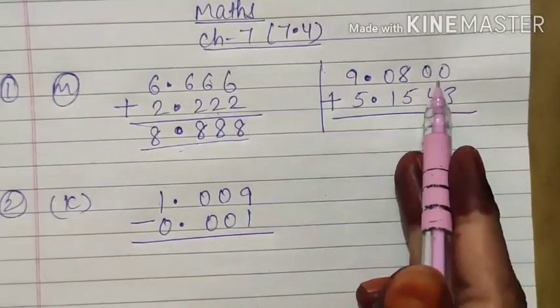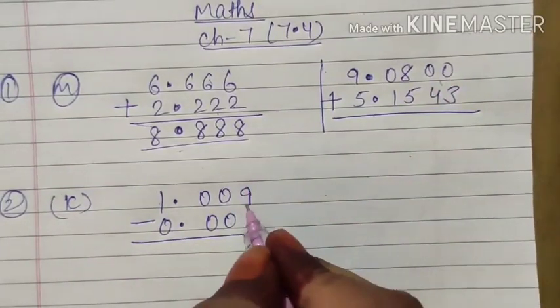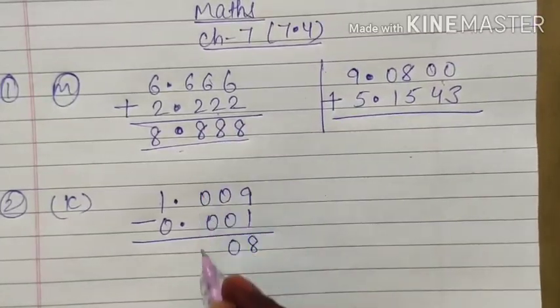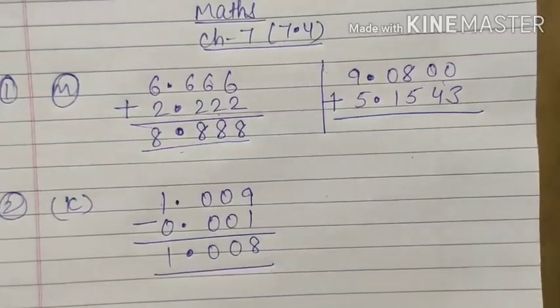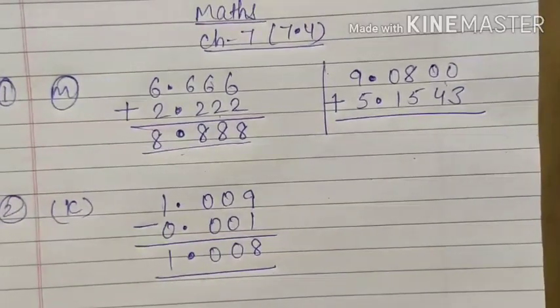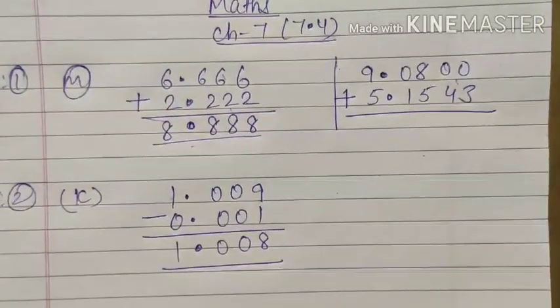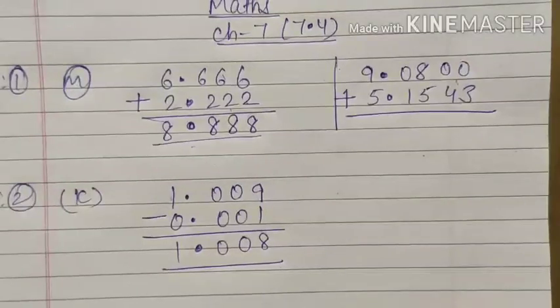So here 9 minus 1 is 8, 0 minus 0 is 0, 0 minus 0 is 0, this is decimal, and 1 minus 0 is 1. So this will be our final answer. So simple addition and subtractions have been given, only we have to take care of the decimals. Thank you.